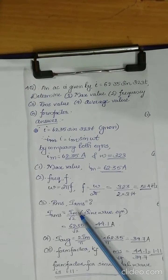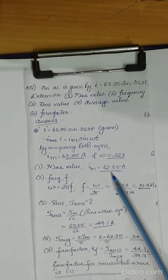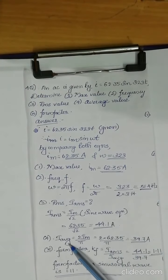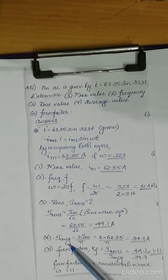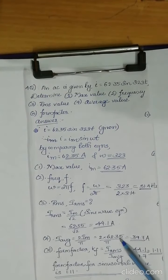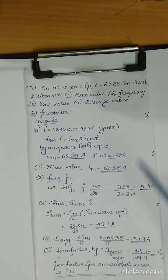So irms is equal to im by root 2. Instead of im, we are substituting its value as 62.35 ampere. So im divided by root 2, and i average is obtained as 2 im by pi. So im is again substituted by 62.35.